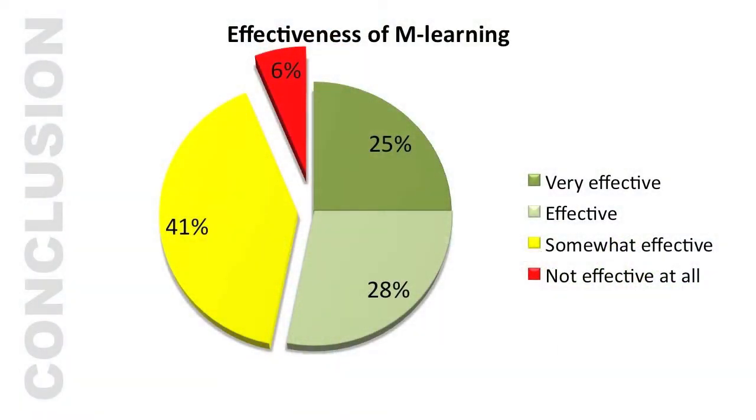An important question we asked was: how effective is mobile learning in their organization? 25% said very effective, 28% said effective, 41% said somewhat effective, and 6% said not at all effective. We think because these organizations are new to mobile learning — which is a recent initiative — they haven't seen the real effectiveness yet. But it's encouraging to see over 50% saying either very effective or effective.